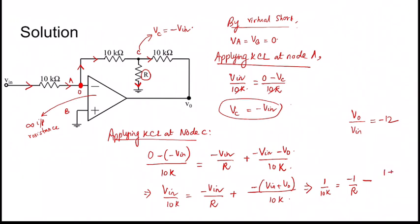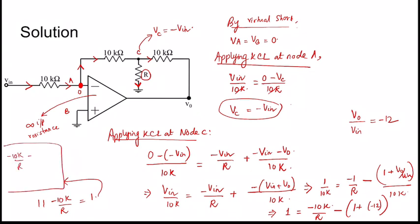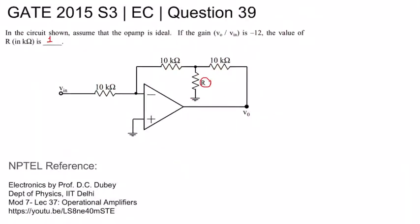We are dividing by Vin, so 1 plus V0 by Vin by 10K. Now 1 plus V0 by Vin, which is minus 12, so minus 11 by 10K. We have minus 1 by R minus minus 11 by 10K, so minus 10 by 10K. Finally R becomes 1K. So the answer is: the value of R in kilo-ohms is 1.